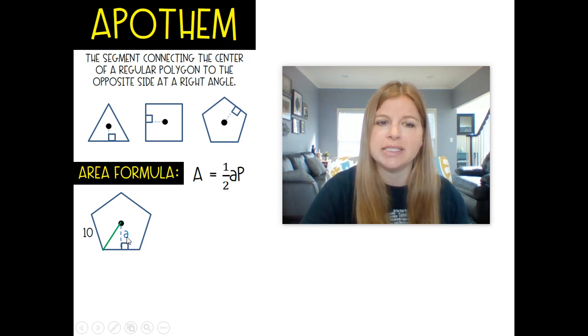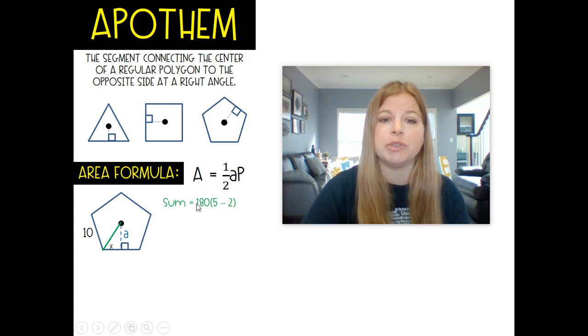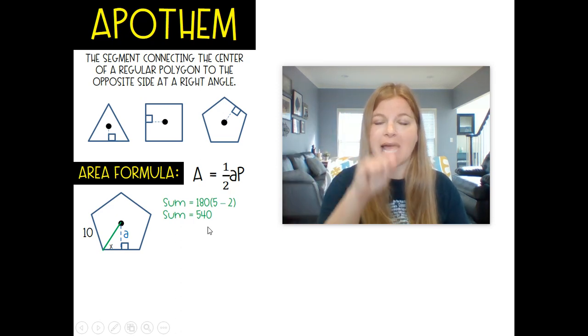Then this a is actually one of the legs of a right triangle. I need to figure out this a within this right triangle, and I know that this length is 10. But I really need to know this angle measure, because if I figure out this angle measure, we learned with all of our trig properties how we can find missing sides of a right triangle. I need to find this measure by using my angle sum formula for the interior angles of a polygon, which is 180 times the number of sides minus 2.